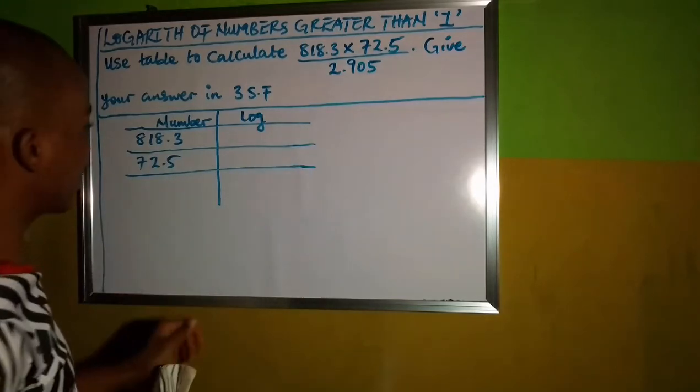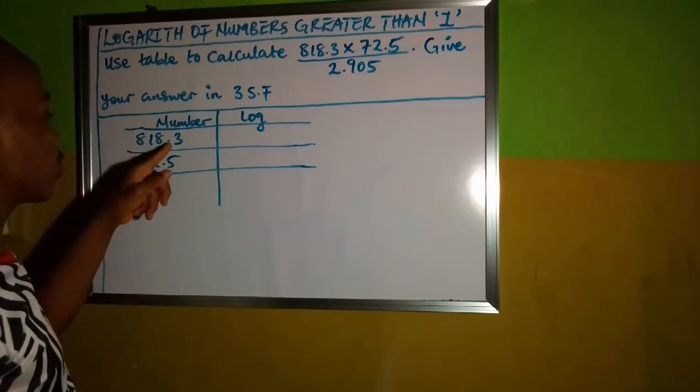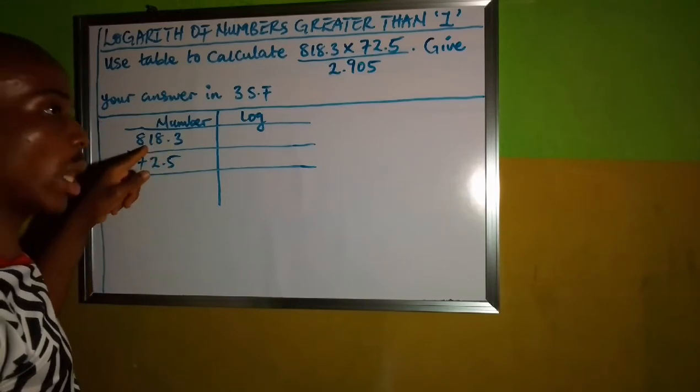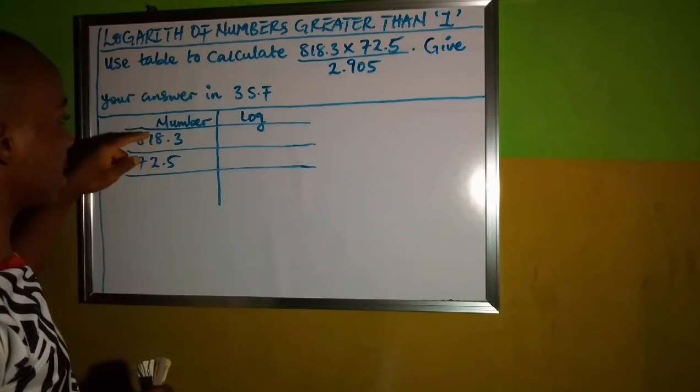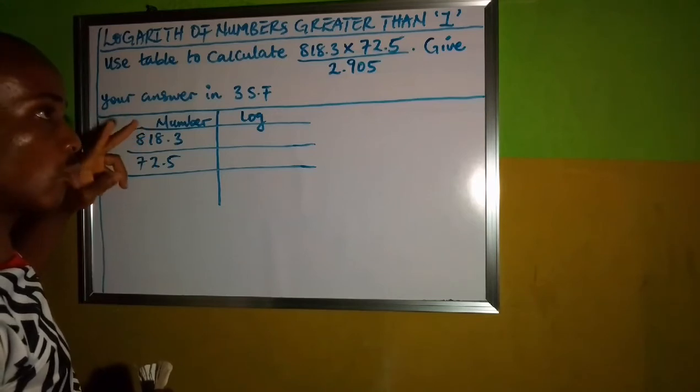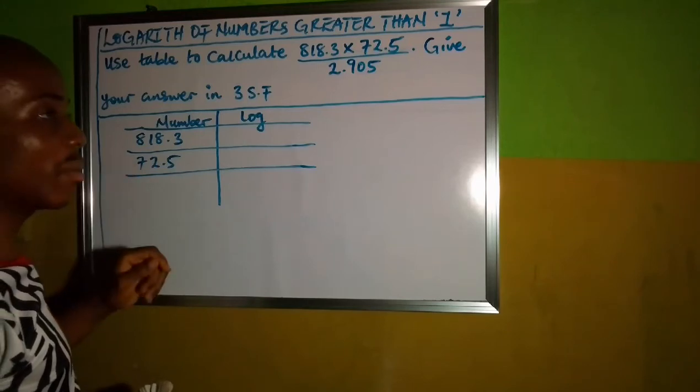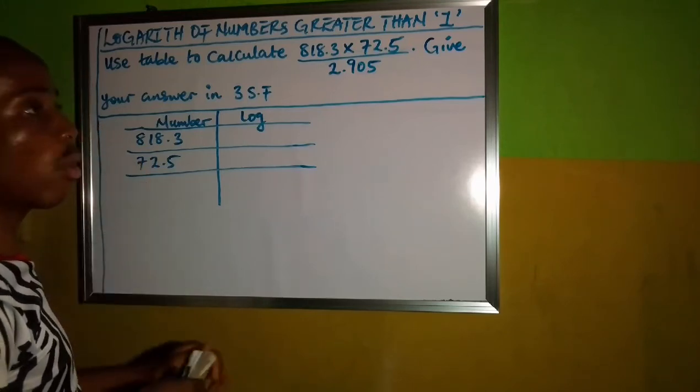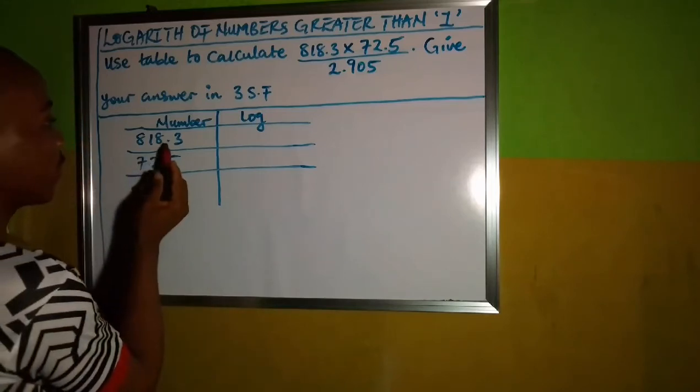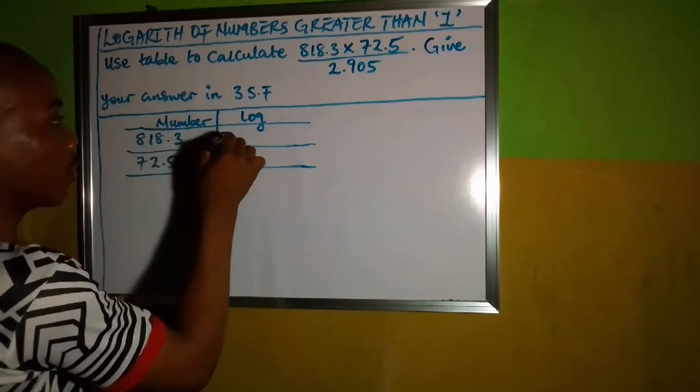Now, we are going to express both in standard form. In standard form, we are going to take this point and move it in between 8 and 1. How many numbers has it skipped to get to this center? It has skipped 2 numbers, that's 8 and 1. Which means the power will be 2. So I will have it as 8.183 times 10 to the power of 2. So I will start off with 2 point.